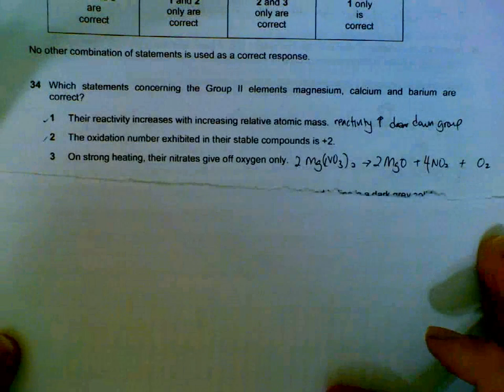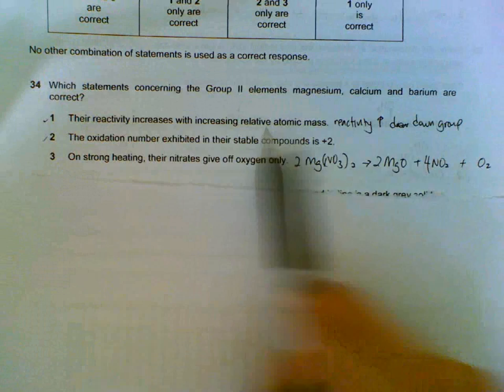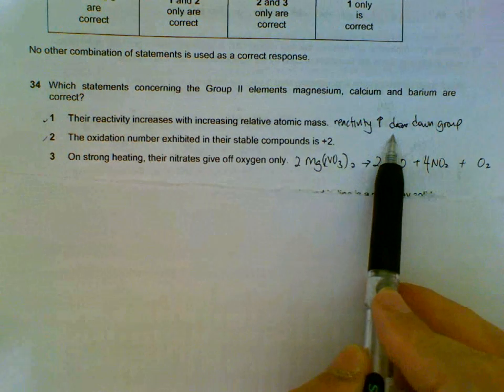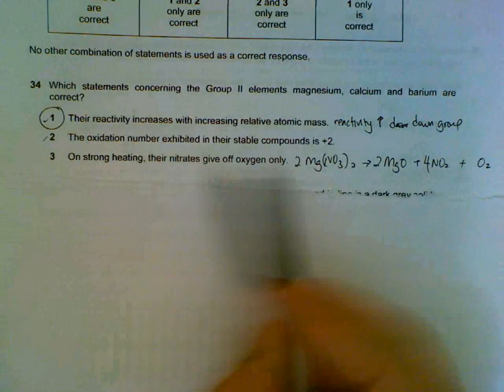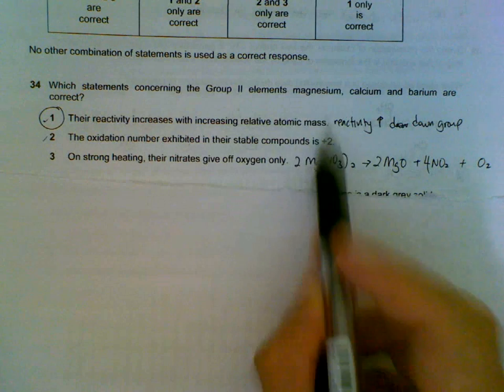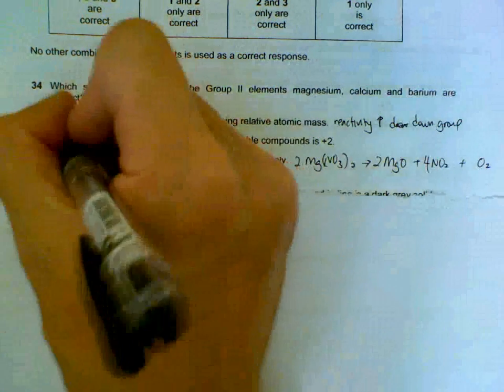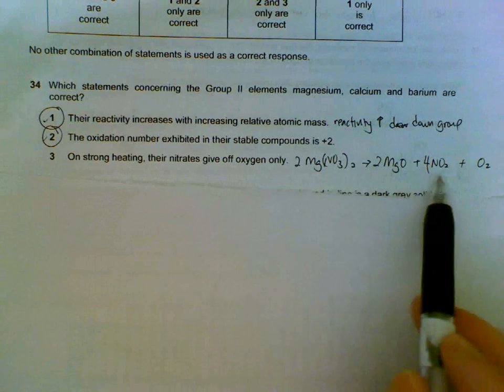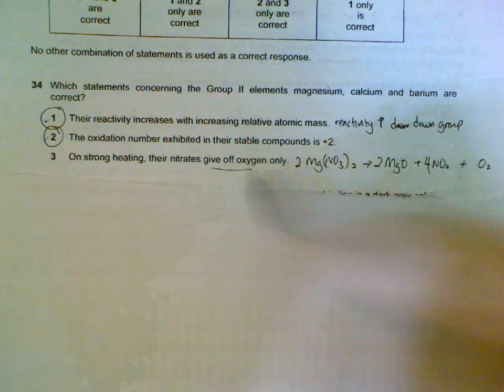Question 34: Which statements concerning the Group 2 elements are correct? Reactivity increases as we go down the group because there's one more shell, it's easier to lose the electron. So statement one is correct. Oxidation number exhibited in the compounds is +2: they form Mg2+, Ca2+, Ba2+, so that's correct. Strong heating the nitrates gives off both oxygen gas and nitrogen dioxide, so statement three is wrong.